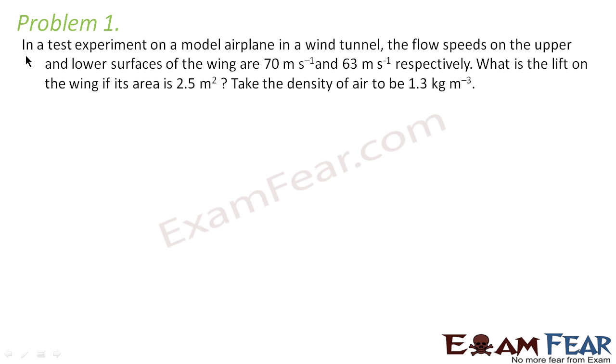The problem says in a test experiment on a model airplane in a wind tunnel, the flow speeds on the upper and lower surfaces of the wing are 70 meters per second and 63 meters per second respectively. What is the lift on the wing if its area is 2.5 meters square? Take the density of air to be 1.3 kg per meter cube.